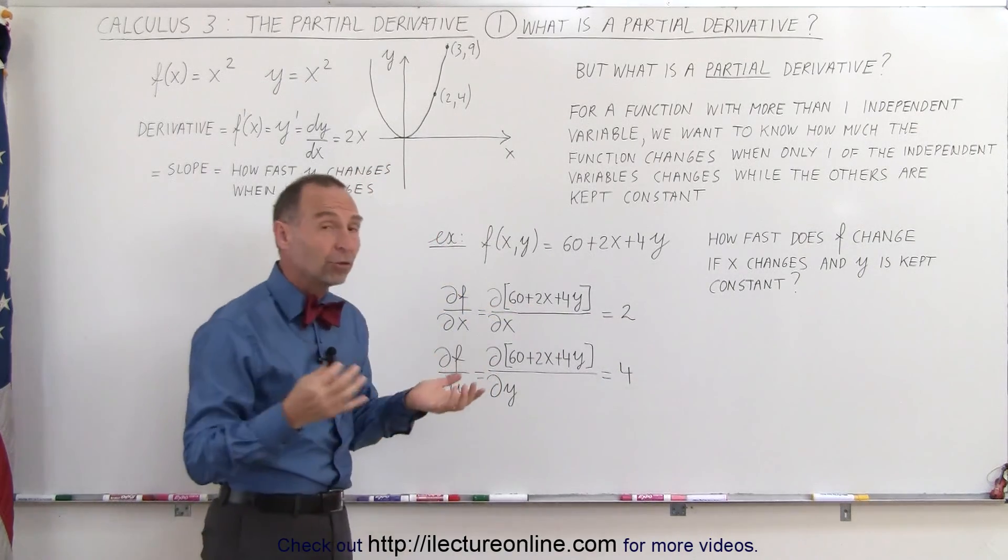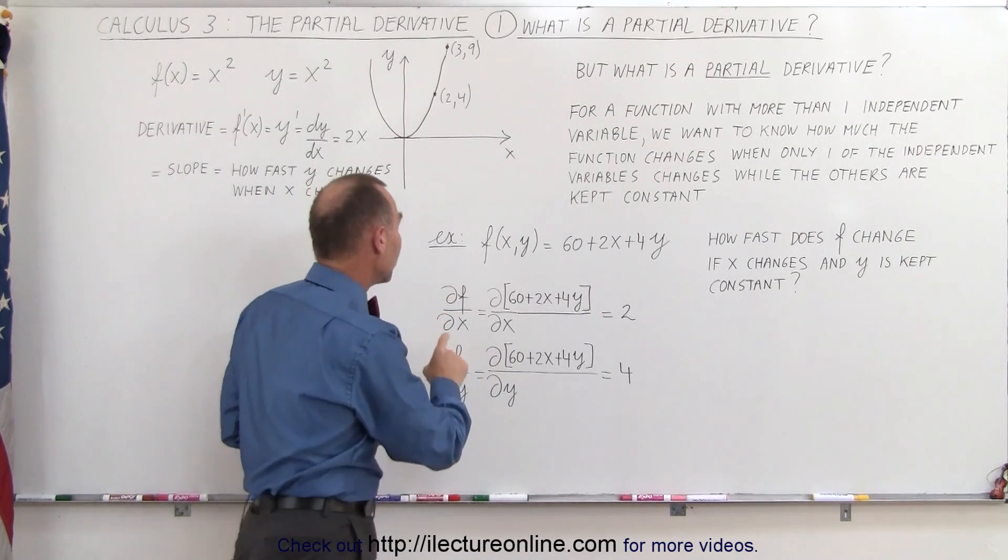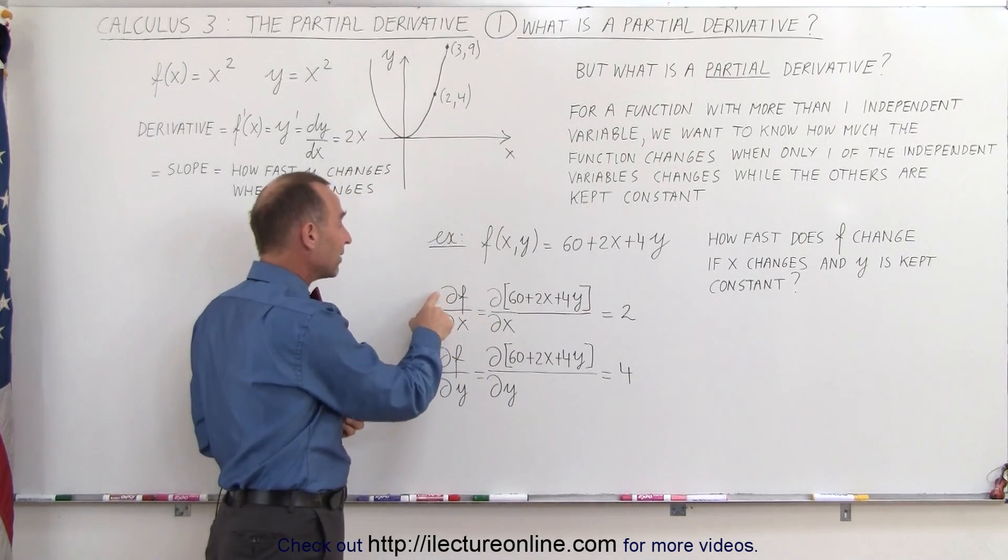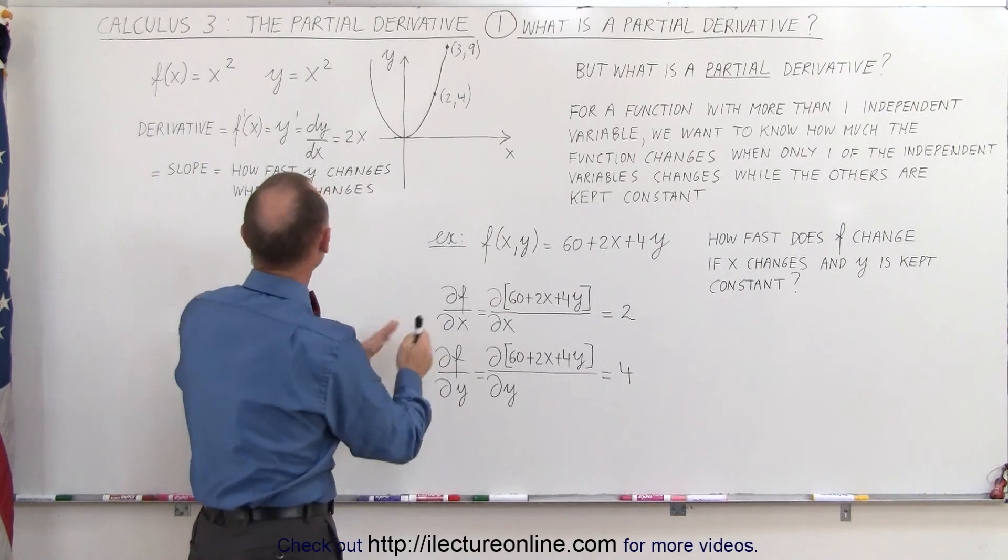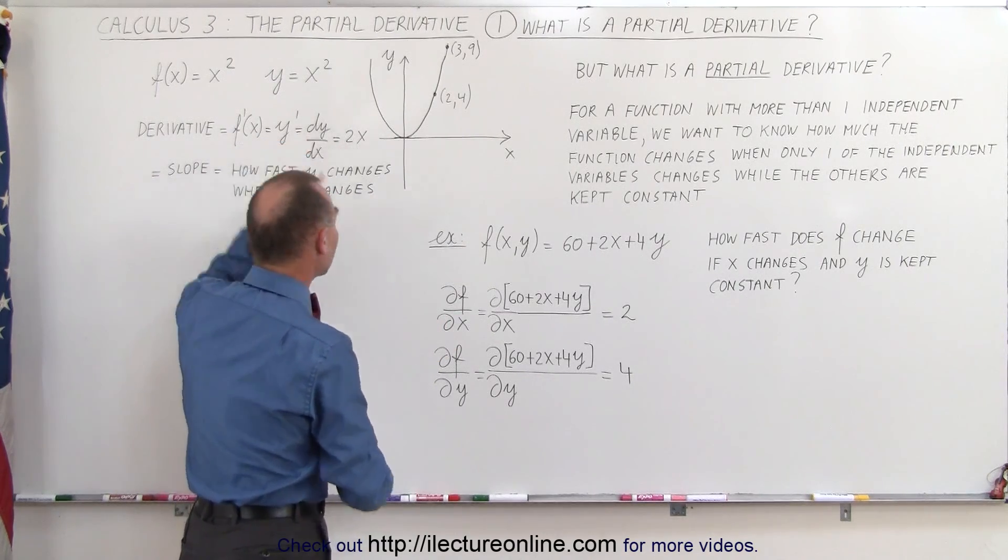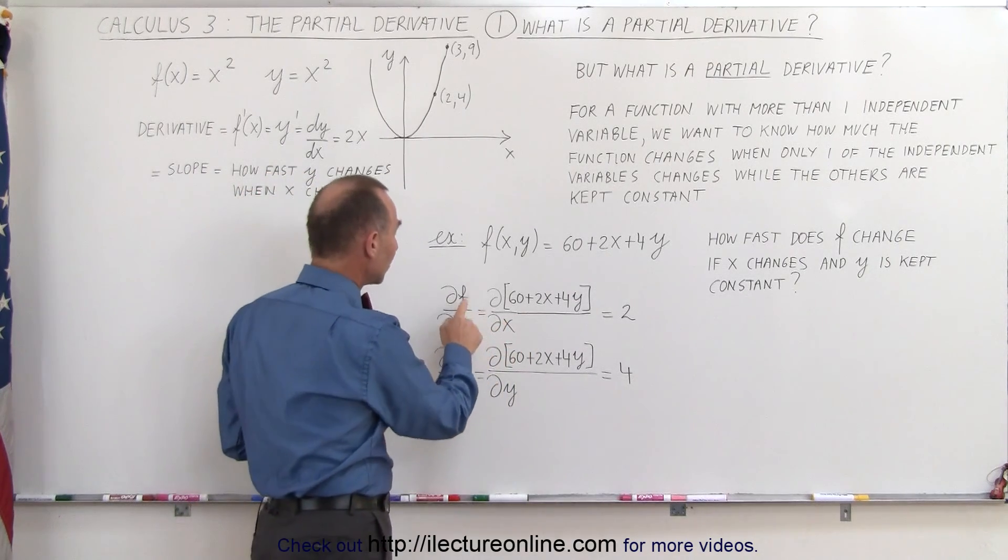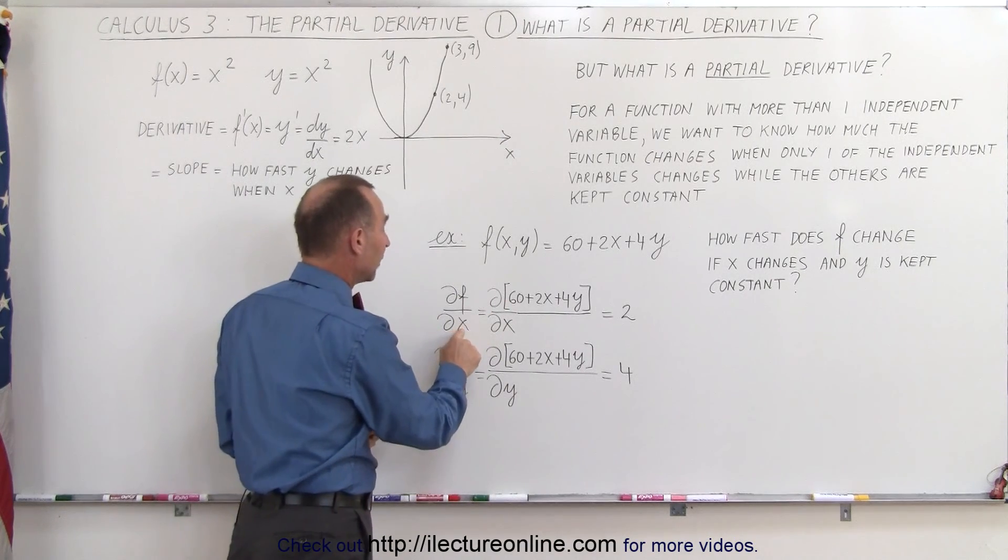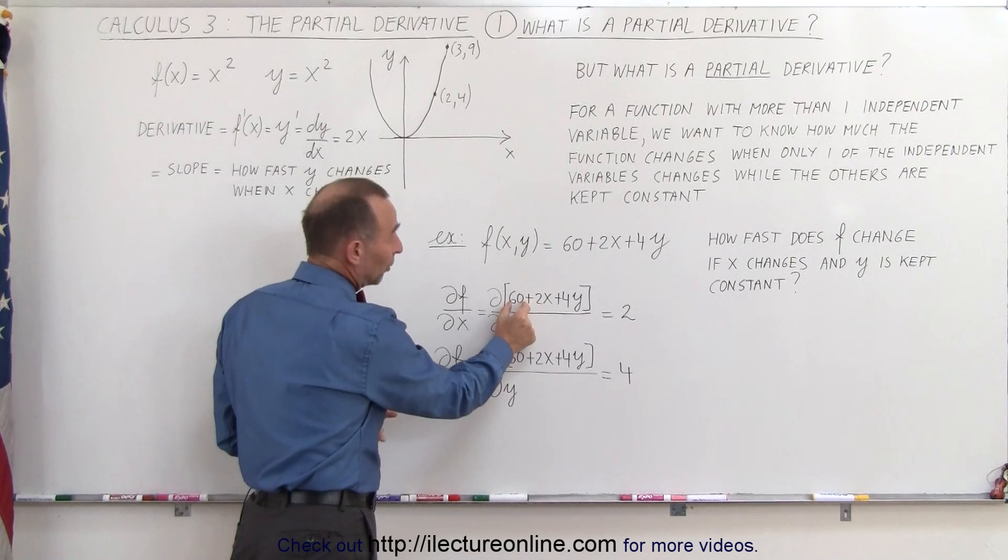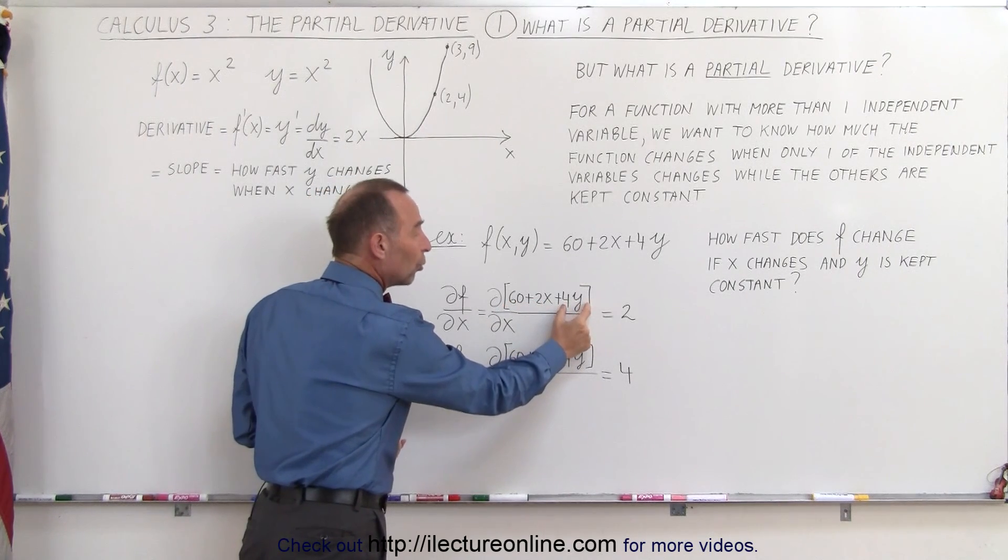Now here's an example of how to do that. Here's our function, and now we take the partial derivative. Notice how instead of writing a d, we write a curly d to show the difference between taking a regular derivative and taking a partial derivative. In this case, we're going to take the partial derivative of the function with respect to the variable x, which means this will be constant—like in all cases—but this will be a constant as well.